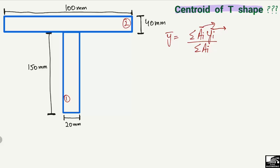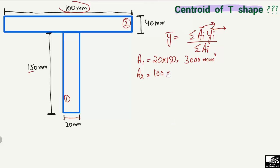Let's find the area and centroid of each object. We have A1 and A2 for the two objects. A1: the width of the first object is 20 mm and the height is 150 mm, so A1 = 20 × 150 = 3000 mm². A2: the width is 100 mm and the depth is 40 mm, so A2 = 100 × 40 = 4000 mm².